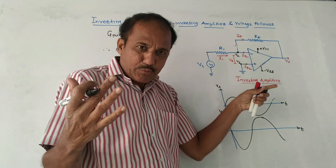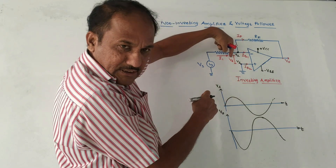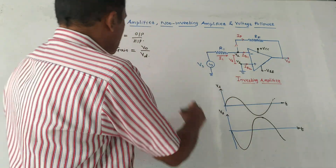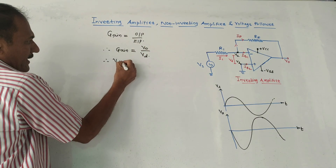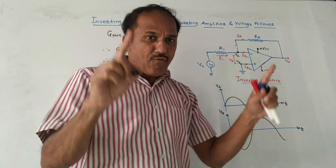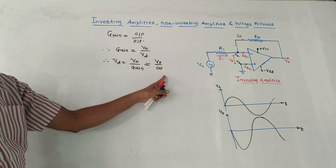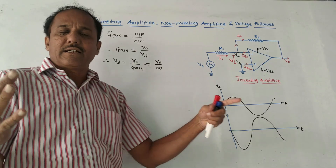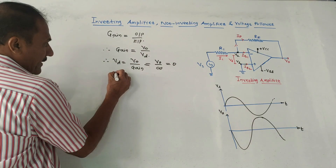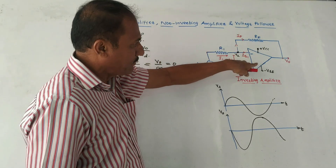For open loop gain, we consider the differential input voltage Vd, which is the difference between the negative and positive terminals, and output voltage V0. Now, recall the ideal parameters of the op-amp: the open loop gain of an ideal op-amp is infinity. So Vd = V0 / infinity, which mathematically gives Vd = 0.